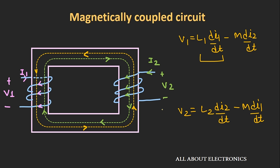Every time you want to find the polarity of this voltage, you first need to check the direction of the windings and then see the direction of the flux — this is a very lengthy process. To eliminate this and make life simpler, we use dot convention. In dot convention, we put a dot on either side of the coil on all coils which are coupled together. Depending on whether the current is entering or leaving the dot, we determine the polarity of the induced voltage due to mutual coupling.